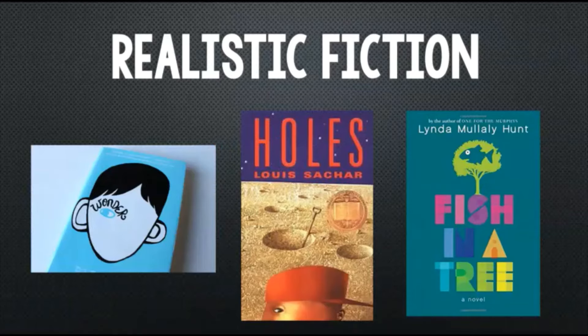Here are three novels that are classified as realistic fiction. The first novel, Wonder, is about a 10-year-old boy living in New York City who was born with a facial deformity that makes it difficult for him to make friends. The second novel, Holes, is about a young man named Stanley who's sent to Camp Green Lake, a reform camp for boys that requires inmates to dig holes in a dry lake bed every day to build character.